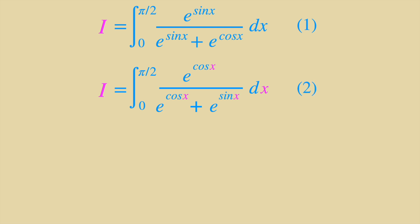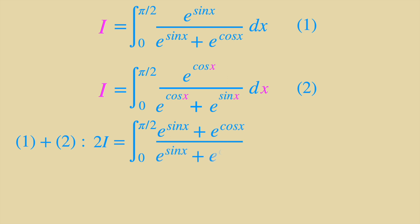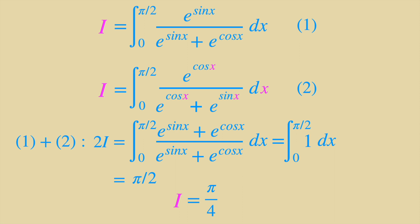Let's label these two integrals as 1 and 2, which are the same, and add them together. So it's easy to get 2I equals the integral from 0 to π/2 of (e to the sin x plus e to the cos x) over (e to the sin x plus e to the cos x) dx, which equals the integral from 0 to π/2 of 1 dx. We have made a big progress because we know this integral equals π/2 minus 0, which equals π/2. So I equals π/4. And that's the right answer.